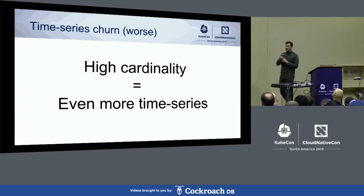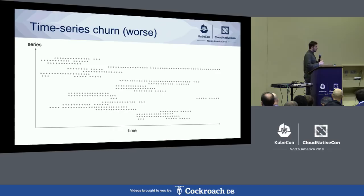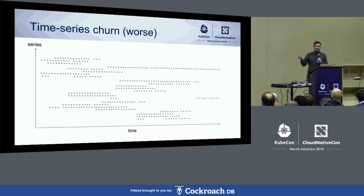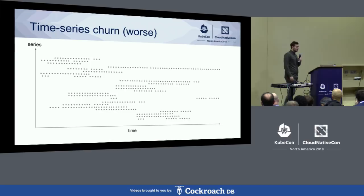We are in a world where targets come and go all the time and they expose hundreds and thousands of time series at a time. In Prometheus 1.x we just thought we completely had to rethink everything that we did. Because one of the key things in the Prometheus 1.x storage was that every single time series was a single file on disk. If you think about millions of active time series, that also translates to millions of files on disk, which some file systems are not even particularly happy about.